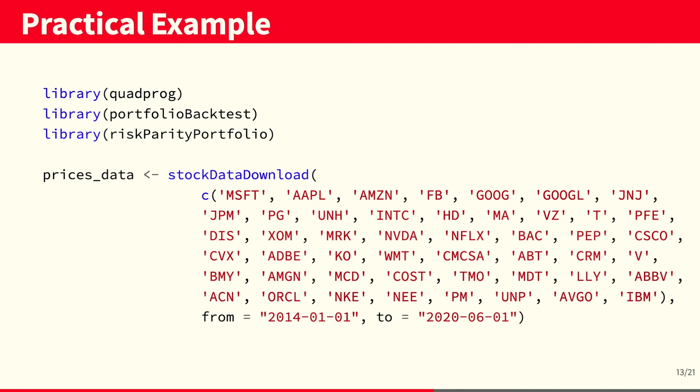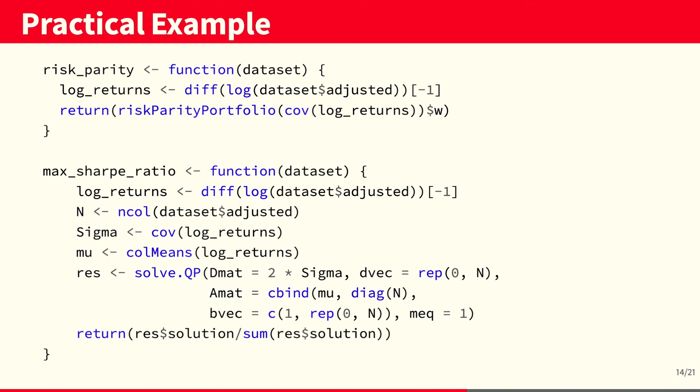Now, we download data from 48 stocks from 2014 to 2020. And to use the portfolio backtest package, we have to write wrappers around the portfolios that we want to backtest. In this case, we are going to compare the risk parity portfolio and the maximum Sharpe ratio portfolio.